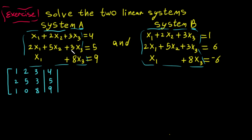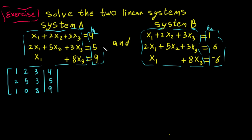The reason we put two augmented matrices is because the coefficients — 1, 2, 3 | 2, 5, 3 | 1, 0, 8 — are the same for both systems. So we put only one coefficient matrix and label the right-hand side columns as B1 and B2. For the second system, we have 1, 6, minus 6. It's very beneficial to combine them this way.